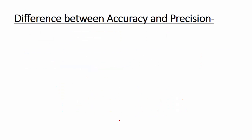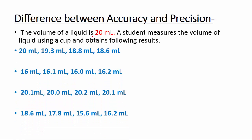Now let's look at the difference between accuracy and precision. The volume of a liquid is 20 ml and a student measures it using a cup, obtaining 4 sets of results. In the first set — 20 ml, 19.3 ml, 18.8 ml, and 18.6 ml — one value equals the actual value, so accuracy is good. However, the results are very far from each other, so precision is poor.